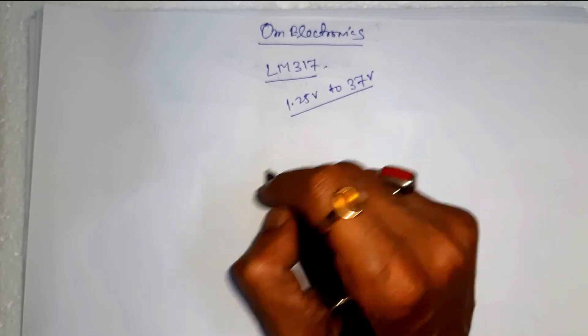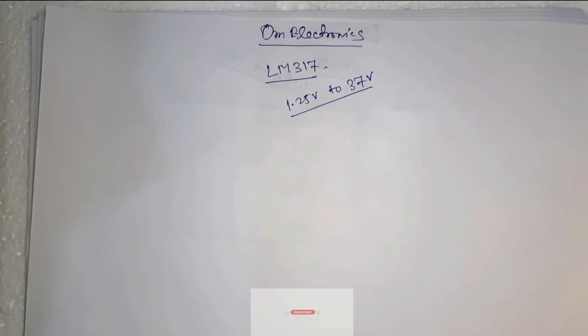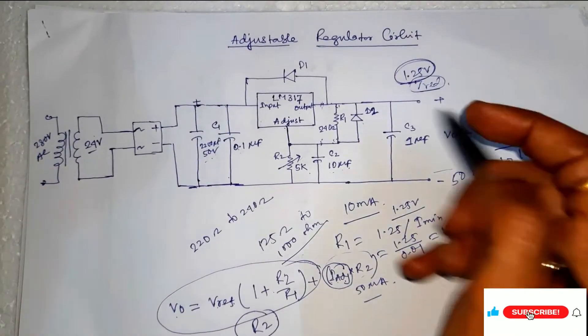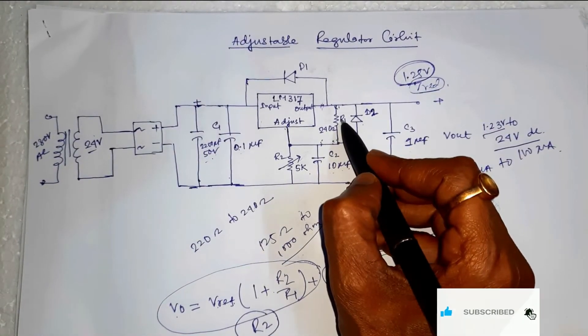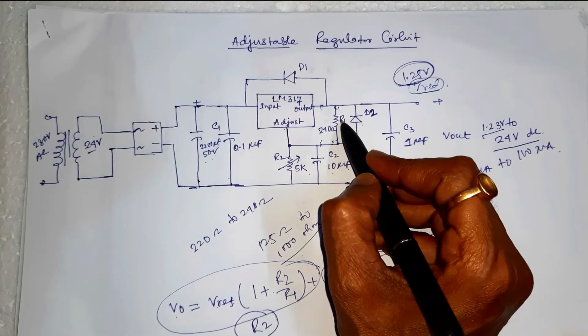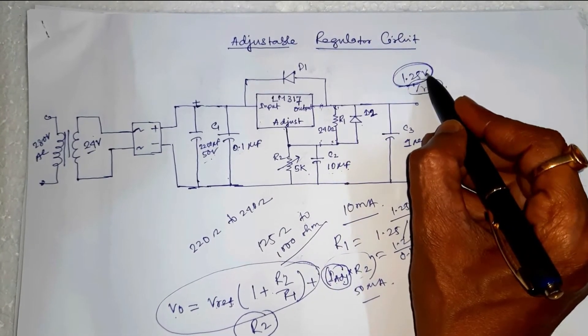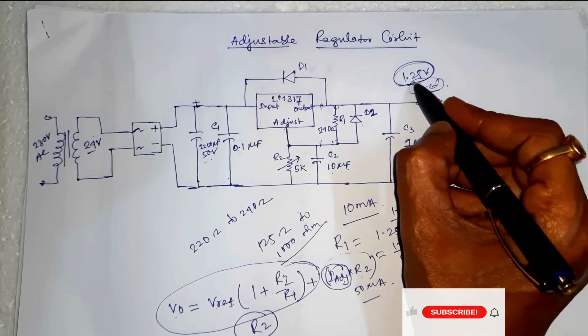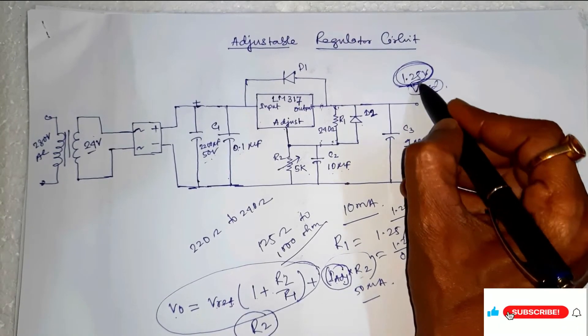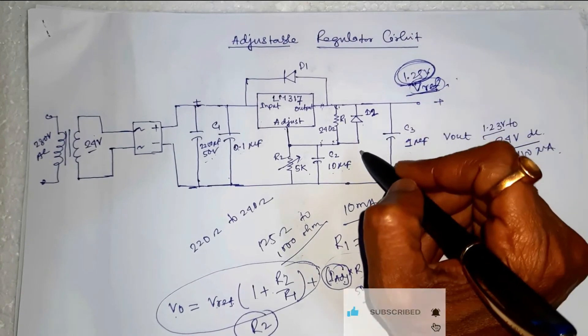The voltage across the feedback resistance R1 is a constant voltage that is 1.25 volt. And this is called V-reference or reference voltage.